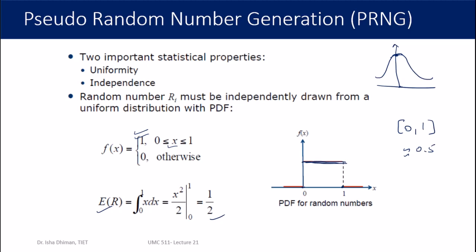Independence means the numbers should not be related to each other. Although they come from a formula, they should appear unrelated. There are various statistical tests to check for statistical independence. This is one of the key characteristics we require from a pseudo random number generator.